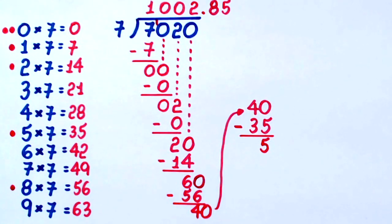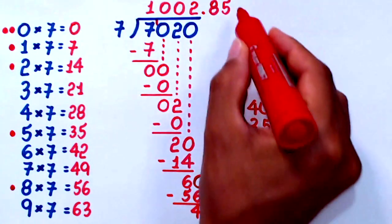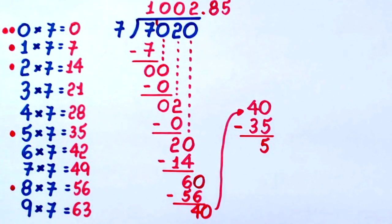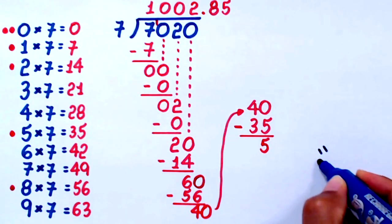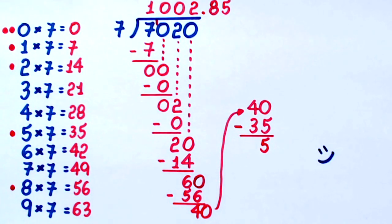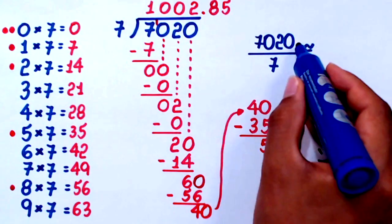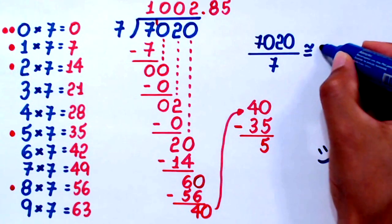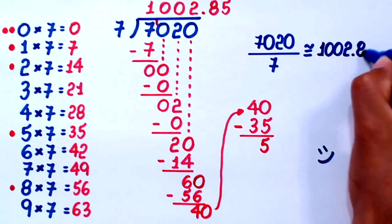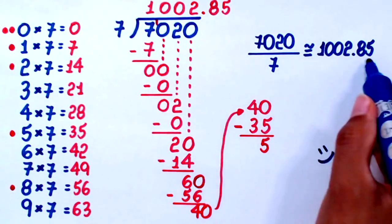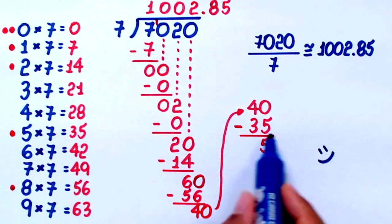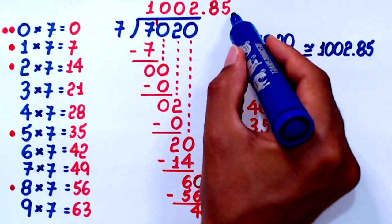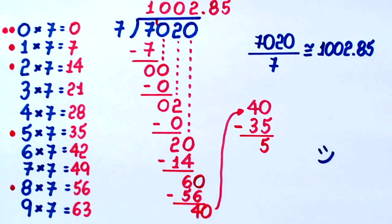If you want, you can continue the division — bring down 0 and ask the question. I challenge you: leave a comment telling me what the next digit is. This video was designed to help you, so in your comment you can put a smiley face — I will be happy to see it. We can now say that 7020 divided by 7 is approximately 1002.85. This is just an approximation; if you want to find more digits, I challenge you to continue at least one step more. That's it for today. I hope you have a nice day. Bye.